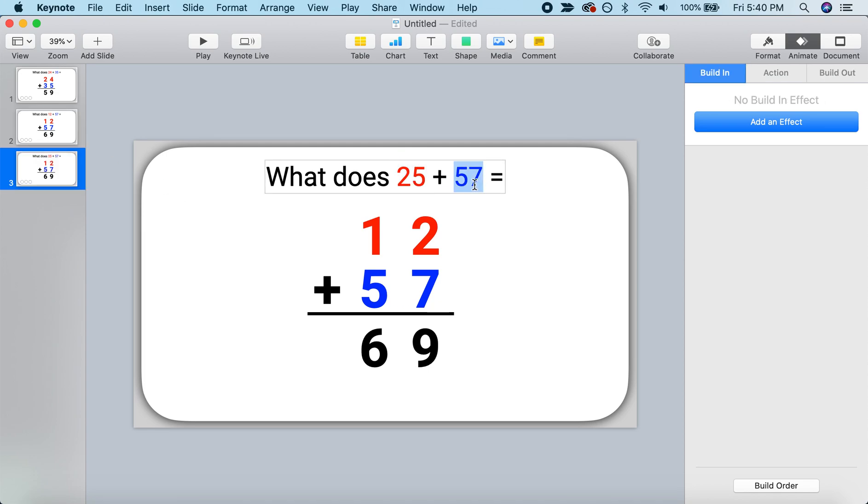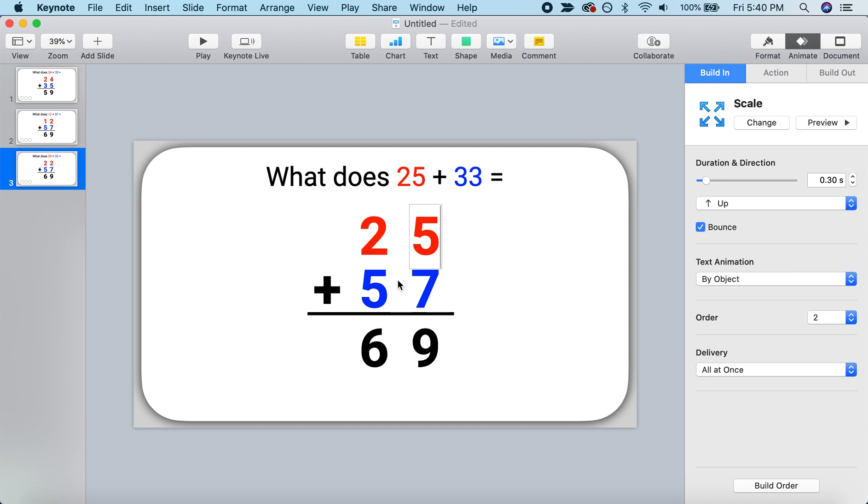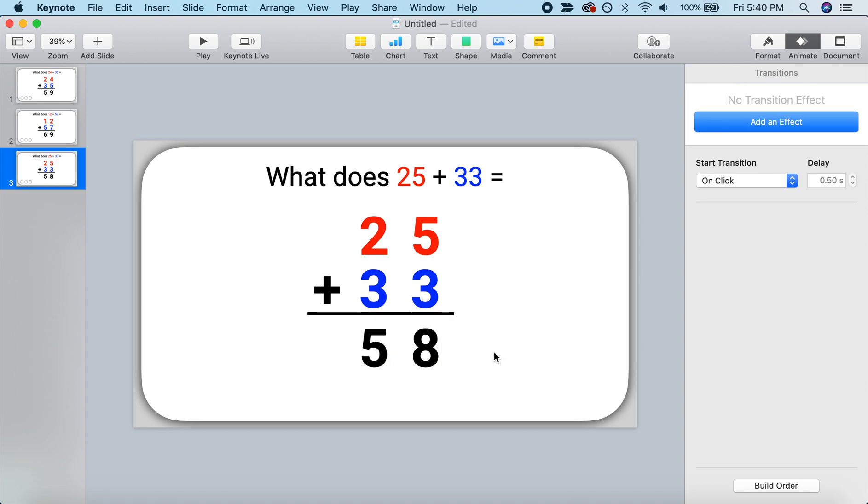We can make another one. Let's do 25 plus 33. It's a simple 25, 33, 5 plus 3 is 8, 2 plus 3 is 5. And just like that, we now have three problems that we could demonstrate with students.